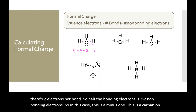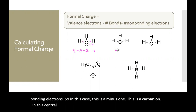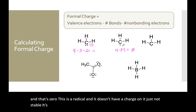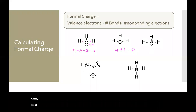On this central carbon we'll do the same thing: four minus three bonds, minus one non-bonding, and that's zero. This is a radical and it doesn't have a charge on it. It's not stable — it's a reactive intermediate — but right now just know that it's neutral.